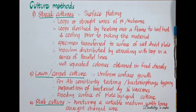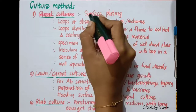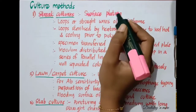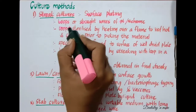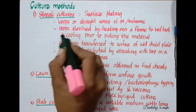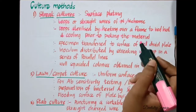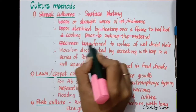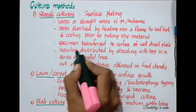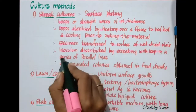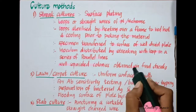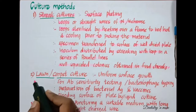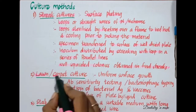There are several methods for culturing bacteria. The first one is streak culture, also called surface plating. Here we use loops or straight wires of platinum or nichrome. These loops are sterilized by heating over a flame to red hot and cooling just prior to picking the material. A loopful of specimen is transferred to the surface of a well-dried plate and the inoculum is distributed by streaking with the loop in a series of parallel lines, giving well-separated colonies in the final series of streaks.